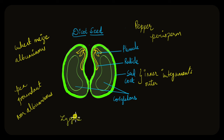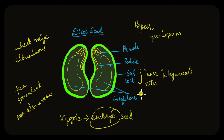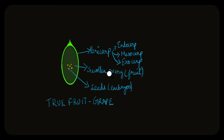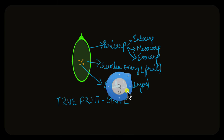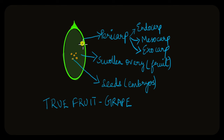Fertilization results in the formation of the zygote, which then develops into the embryo enclosed within the seed. But how is the fruit formed? If the ovules give rise to the seeds, it is the ovaries that give rise to the fruits. When seed formation is occurring, the ovary begins to swell and forms the fleshy part of the fruit. The walls of the ovary begin to harden and form the pericarp — the wall of the fruit, like the wall of a grape. The pericarp is made up of three layers: the inner endocarp, the middle mesocarp, and the external exocarp.